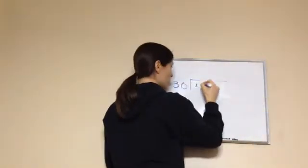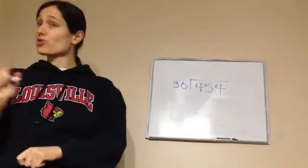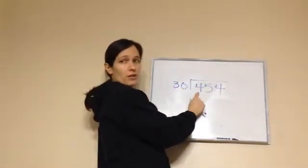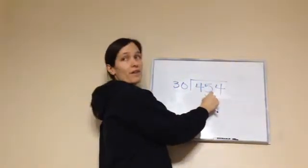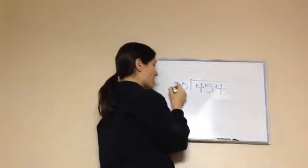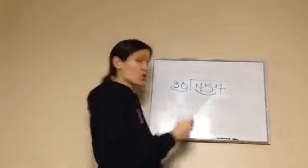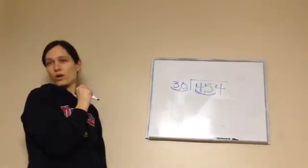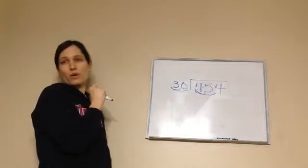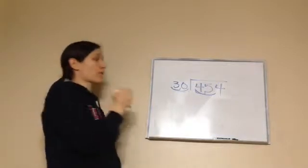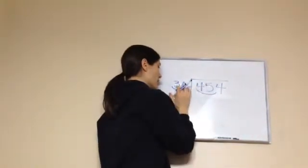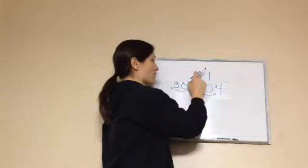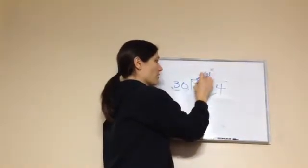This is 454 divided by 30. Let's do the trick method first. Will 30 go into 4? No. Will 30 go into 45? Yes. So 30 goes into 45. Using the trick: 3 goes into 4 — 3 times what equals 4, the closest without going over? 1 is our answer. I'm putting a 1 here because it covers 45, not just 4. If I just did a 1 for 4, 30 times 1 would not equal 4. We want 45, the whole number.